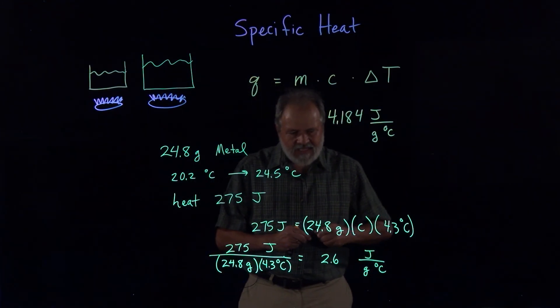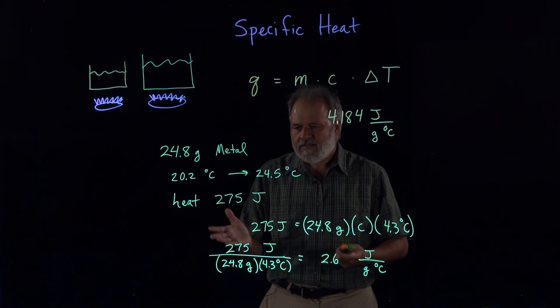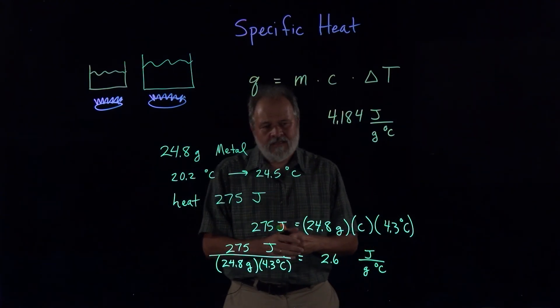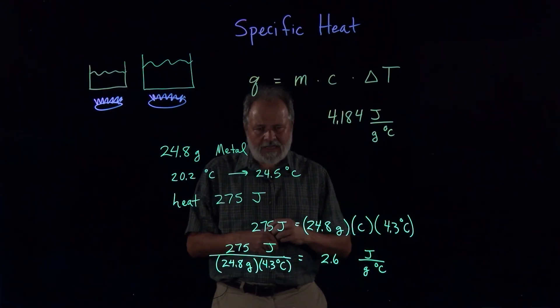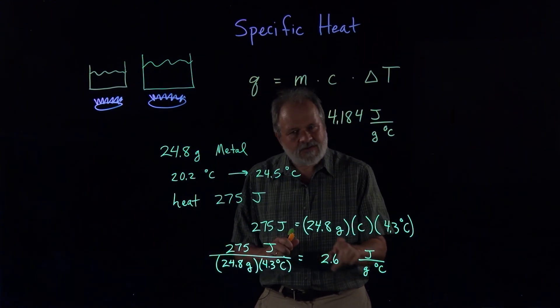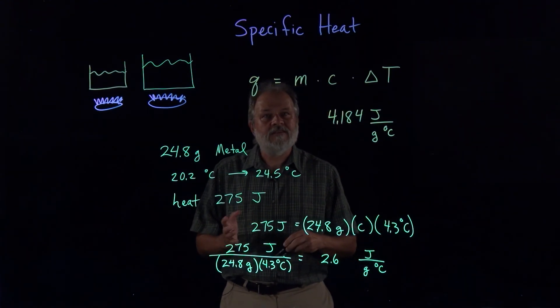And so this is actually rather high heat capacity for a metal, and so if you look in the table in the book, most of them are below 1. So this turns out to be closest to beryllium, so this is a piece of beryllium metal.